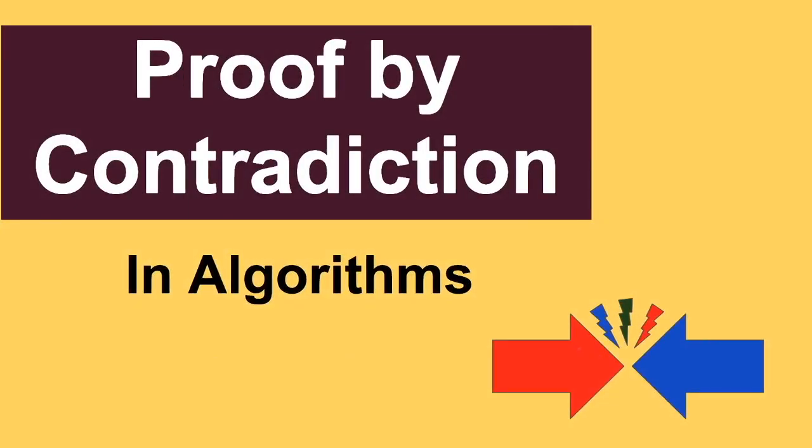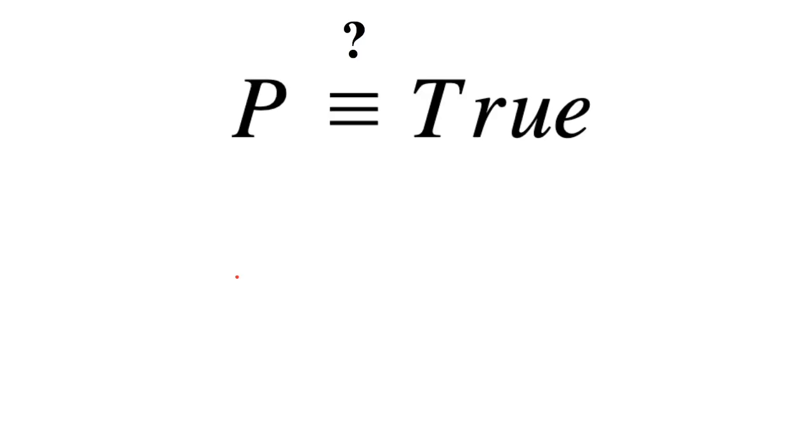Hello everyone, this is a very short lecture on what is proof by contradiction and how we use it to prove something about an algorithm. In proof by contradiction, you want to prove some statement is true, but it's hard to prove this directly. We don't know how to prove this directly.